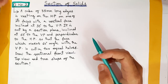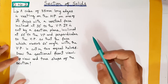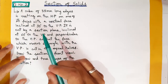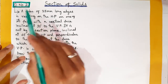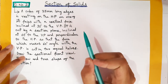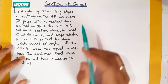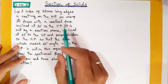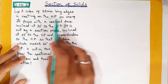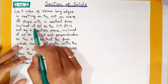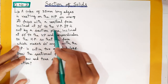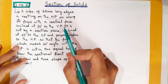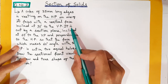Hello everyone, I am Muhammad Rafiq, welcome back to my YouTube channel Rafiq Engineering Drawing. In this video we will see the sections of solid, question number two. You are given a cube of side 35 mm long edges. In sections of solid, first we have to see where the solid is resting and how it is resting.